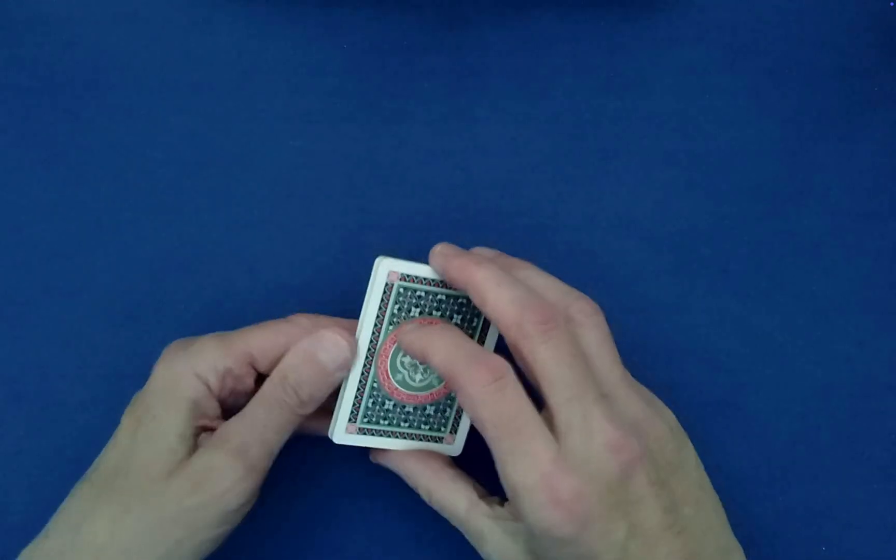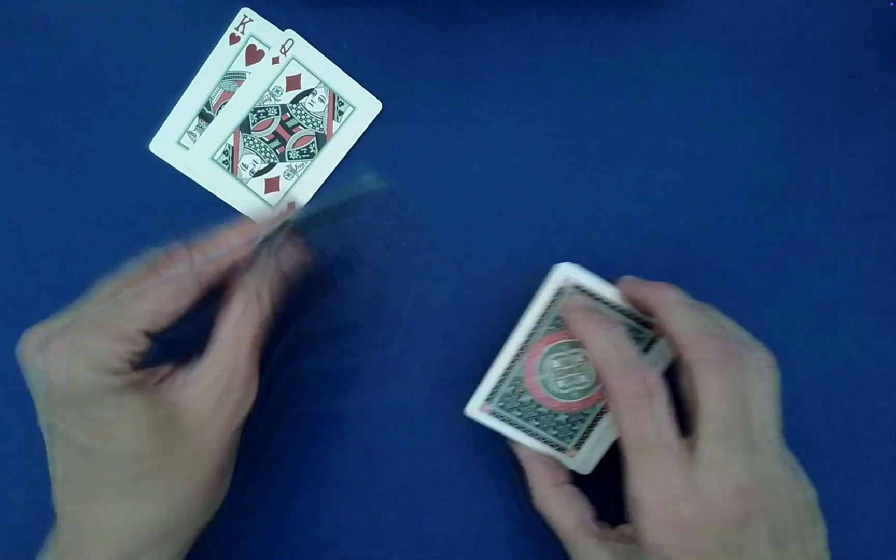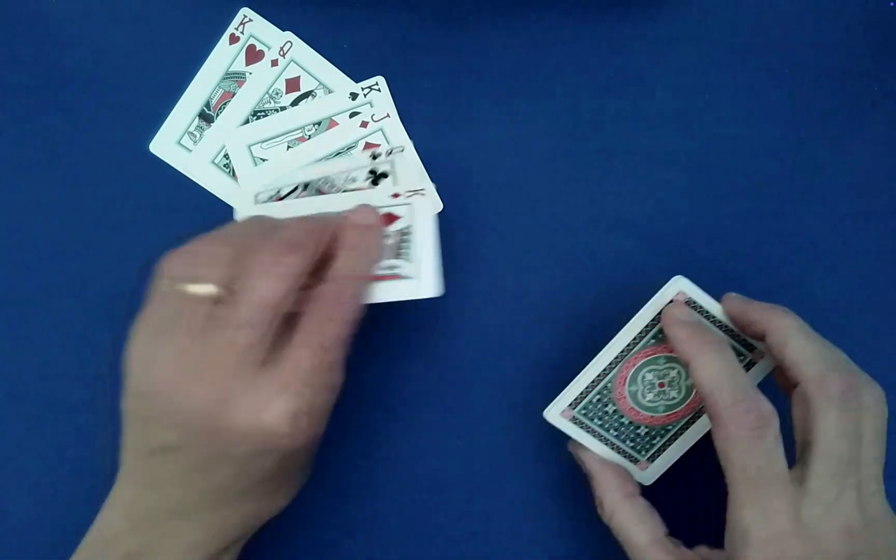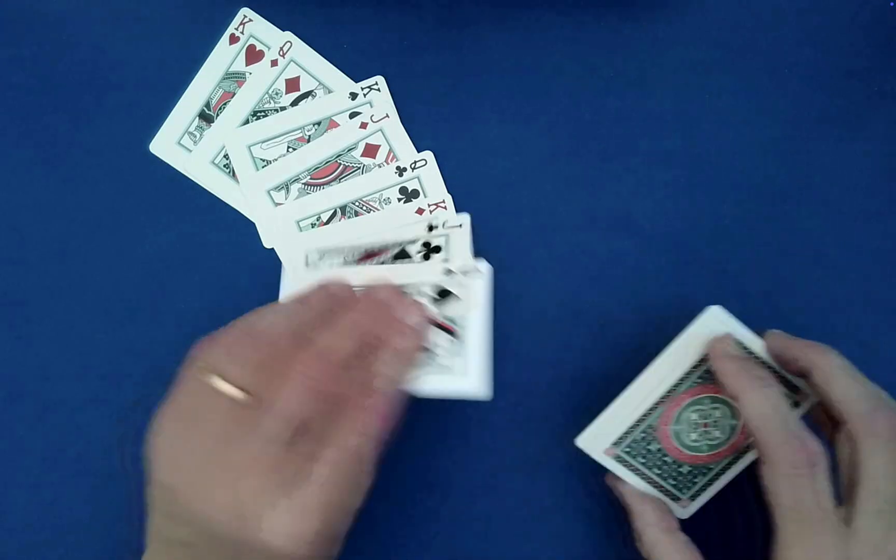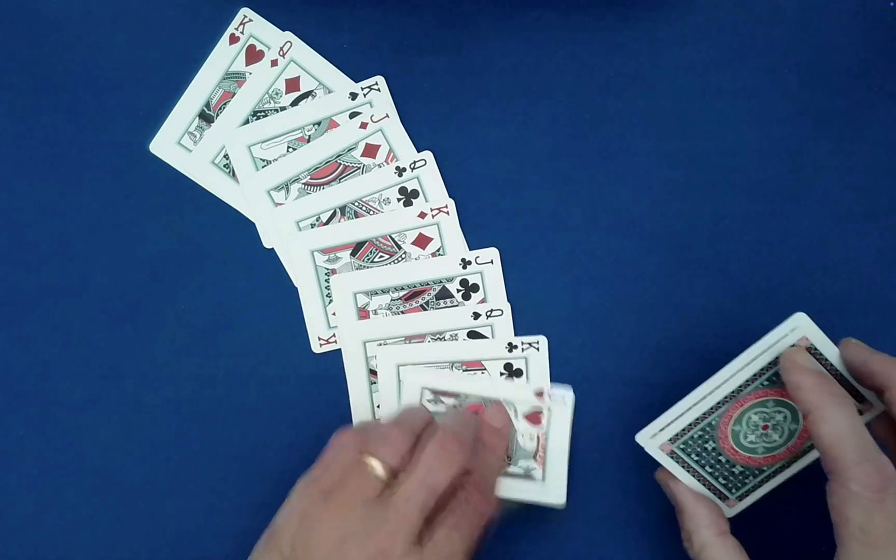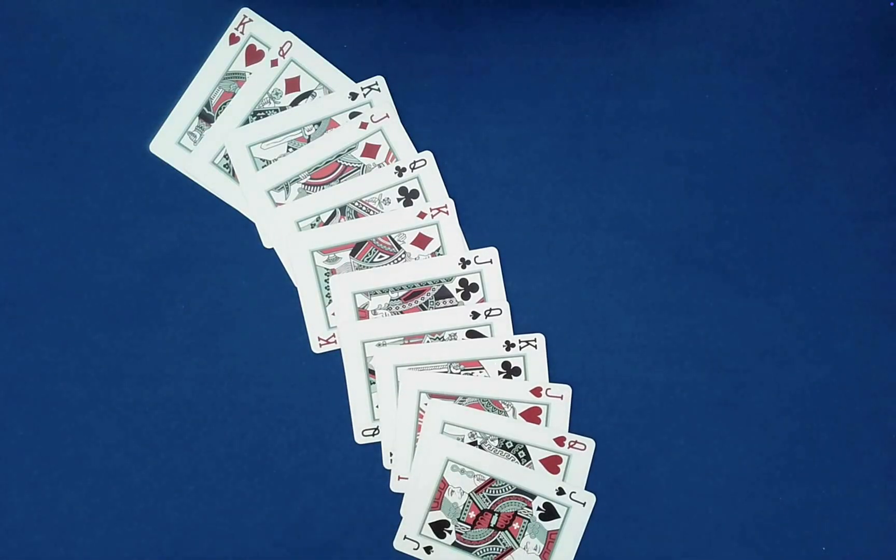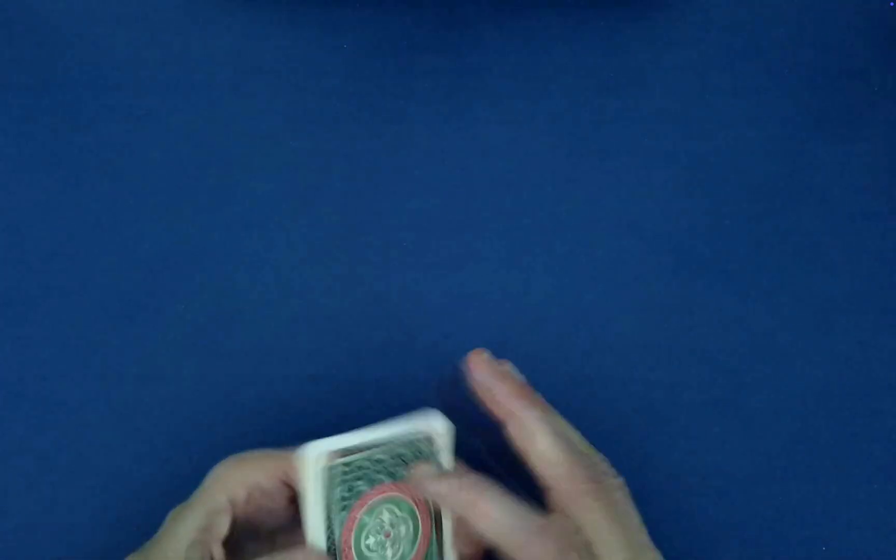Now if you perform a klondike, the queens will not match up at this point. Okay, but if you perform a second klondike shuffle, they will. That's the magical step there.